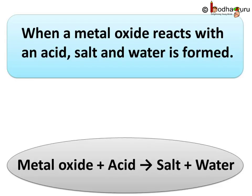To sum up what we learnt about acids and bases today: when a metal oxide reacts with an acid, salt and water is formed. So, metal oxide plus acid gives salt and water. Hence, we say metallic oxides are basic in nature.